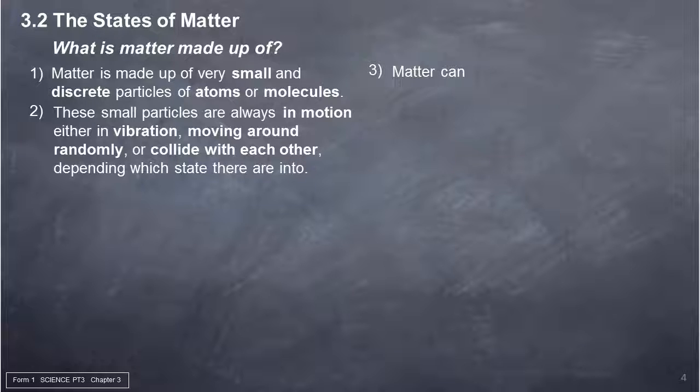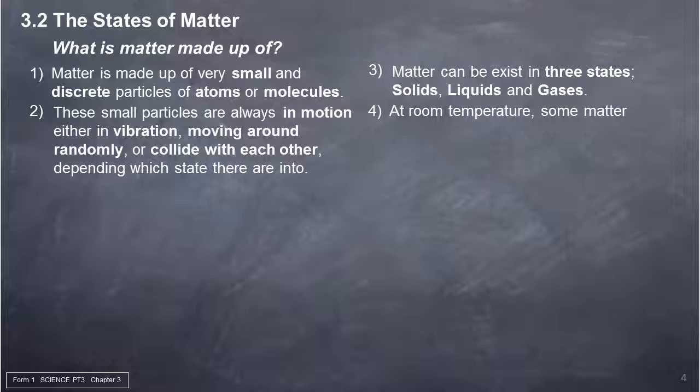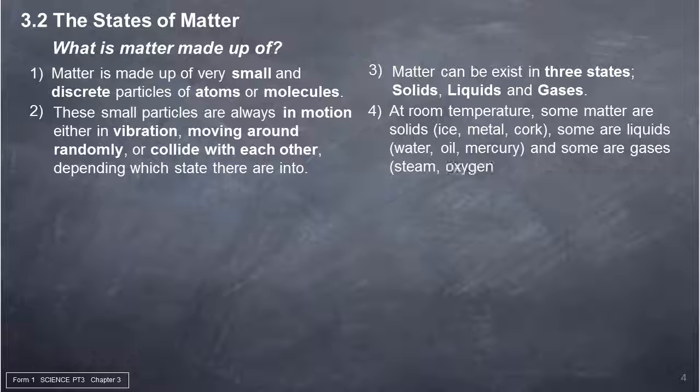3. Matter can exist in three states: solids, liquids, and gases. 4. At room temperature, some matter are solids (for example ice, metal, cork), some are liquids (for example water, oil, mercury), and some are gases (for example steam, oxygen, nitrogen).